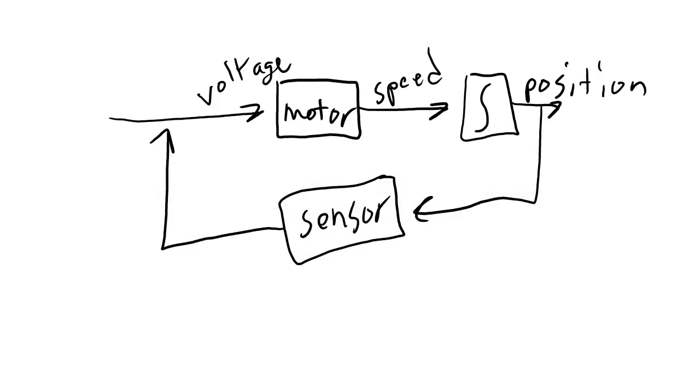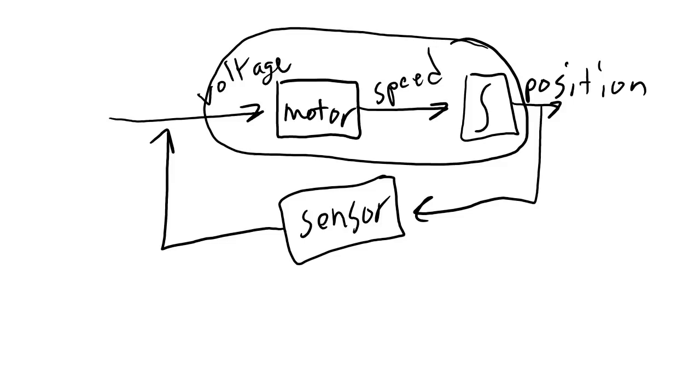Previously we looked at a block diagram for feedback control that looks something like this. I'm going to start here today and be a little bit more specific about how this block diagram works. The first thing I'm going to do is take all of this stuff on the top and lump it together into one block.